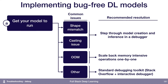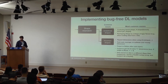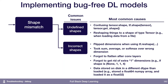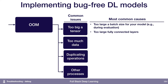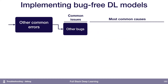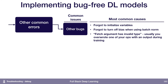To summarize getting your model to run: there are a lot of issues that can cause your model not to run. The strategies I recommend are mostly just stepping through your model creation in a debugger, making sure all the shapes and data types are what you'd expect. If there are any cryptic errors, start by Googling them, because error messages in TensorFlow and PyTorch are not always straightforward. There are more detailed strategies for shape mismatch, casting issues, and out-of-memory errors in the slides.